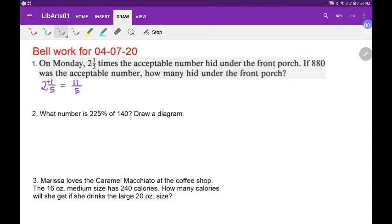So 11 over 5 times the acceptable number? Well, okay, so 11 over 5 times 880 over 1. How many hid under the front porch? More than what was acceptable, apparently. I'm kind of curious if... I know 5 goes into 880, so I'm going to cancel.